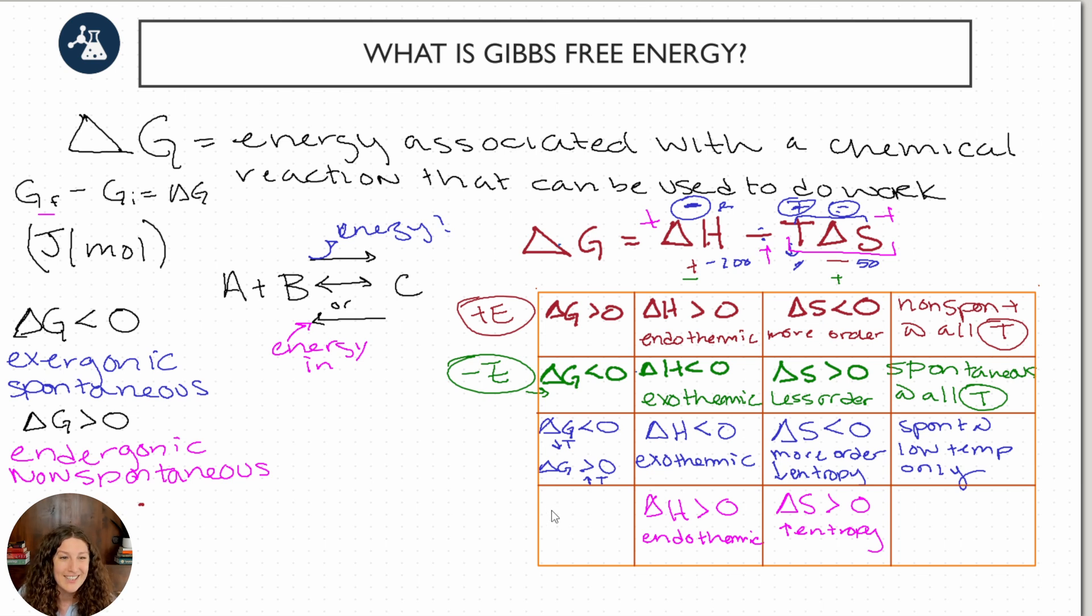So what temperature do we need to have T delta S win? A bigger T, right? So delta G being less than zero will happen at high temperatures. Delta G being greater than zero, non-spontaneous, would happen at low temperatures. So spontaneous here, only at high temp.